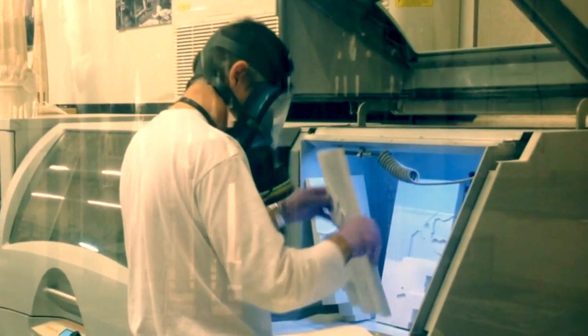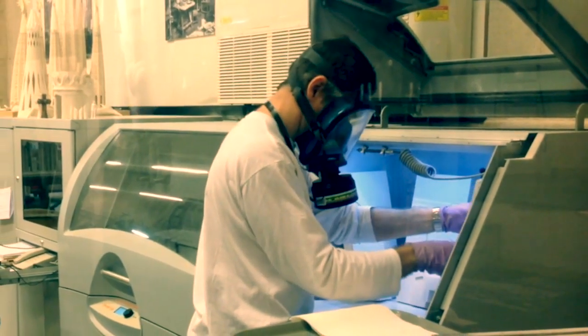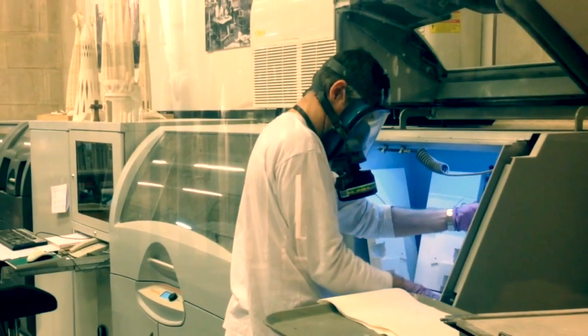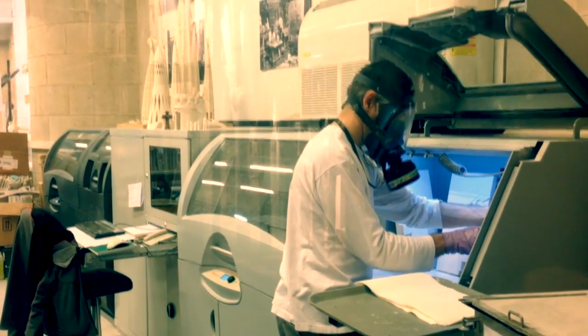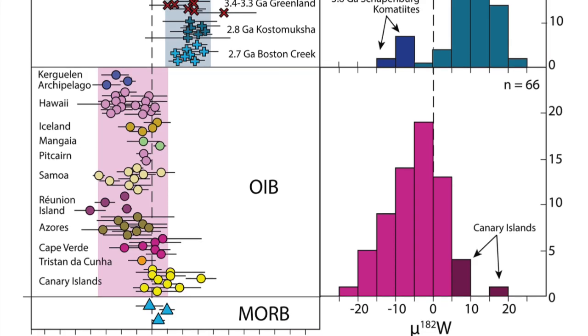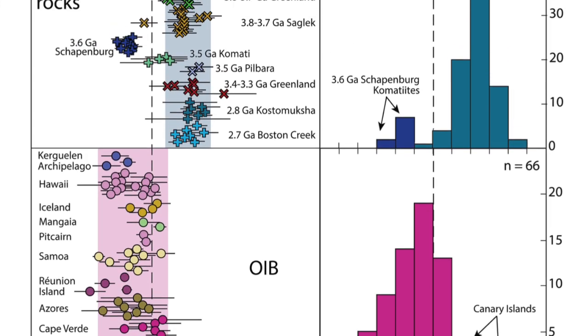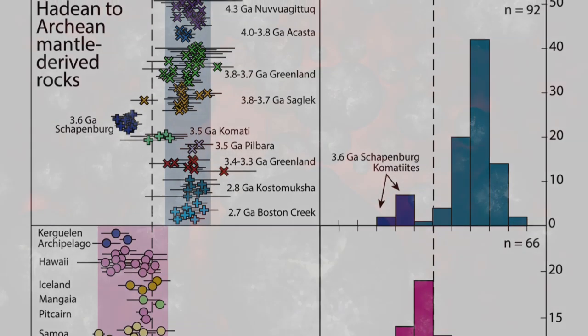Now, the concentration of tungsten in rocks is tiny, only a few parts per billion. So, it's difficult to detect the levels of these isotopes. Only a few labs in the world have the right equipment. Once they were able to do the analysis, they found that volcanic rocks from the surface had tungsten 184 from the core.